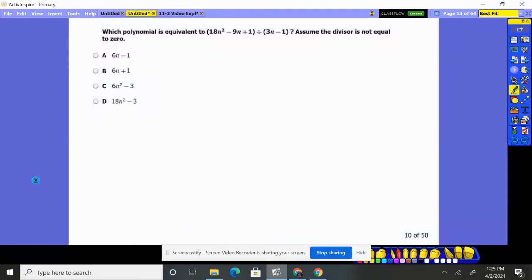Number 10, which polynomial is equivalent to all that divided by all that? Assuming the divisor is not equal to zero because you can't divide by zero. You can't put things in groups of nothing. It makes no sense.